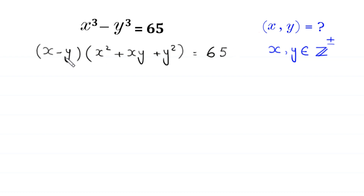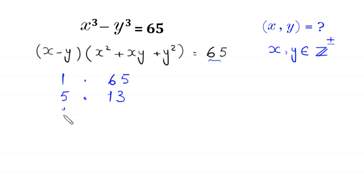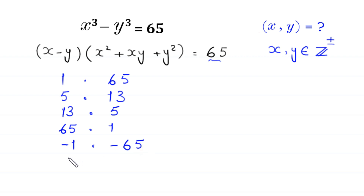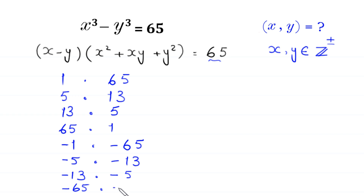Now, we have a product of two factors on the left side, and 65 can be factorized as 1 times 65, 5 times 13, 13 times 5, 65 times 1, negative 1 times negative 65, negative 5 times negative 13, and negative 13 times negative 5, and negative 65 times negative 1.